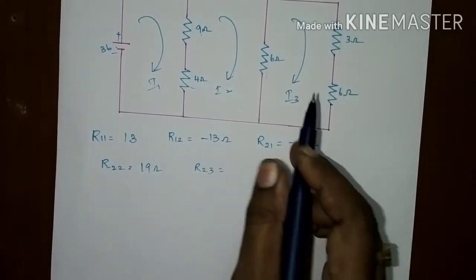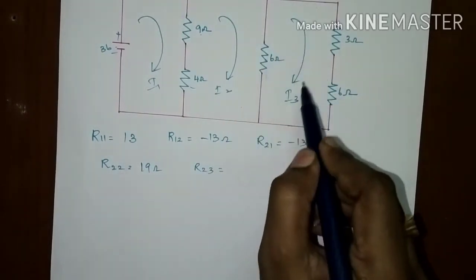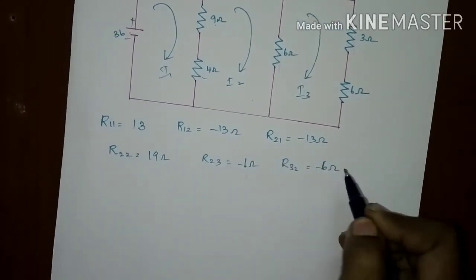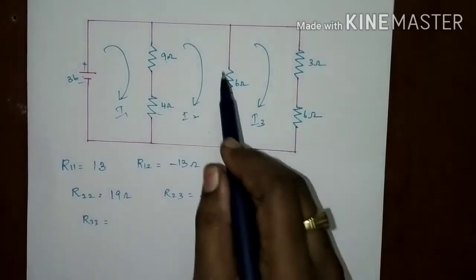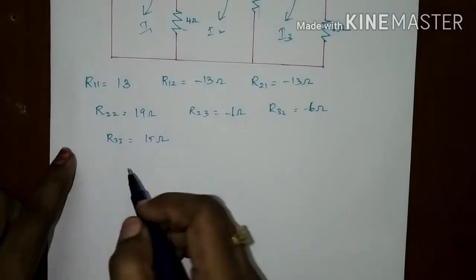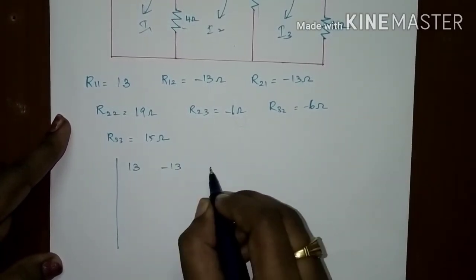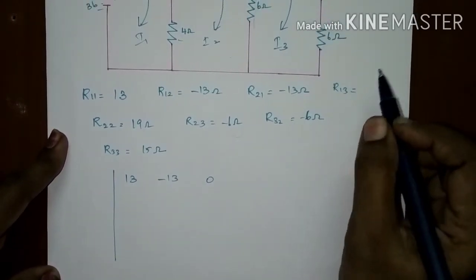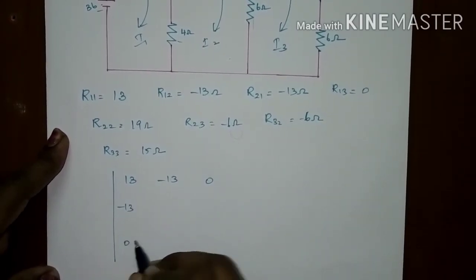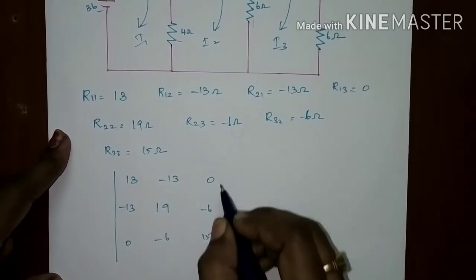R23 is the common resistance of the second and third mesh; the common resistance is 6 ohms with opposite current directions, so R23 = minus 6 ohms. By symmetry, R32 = minus 6 ohms. R33 is the self-resistance of the third mesh, which is 9 + 6 = 15 ohms. R13 is the resistance common to the first and last mesh — there is no common resistance, so R13 = 0. The complete determinant matrix is: [13, −13, 0; −13, 19, −6; 0, −6, 15].